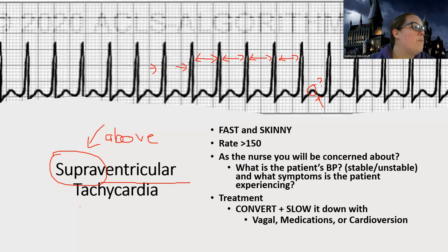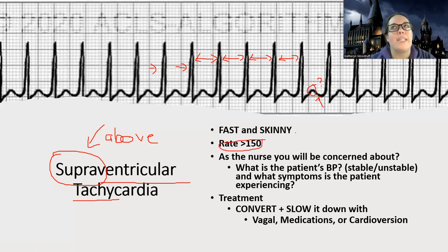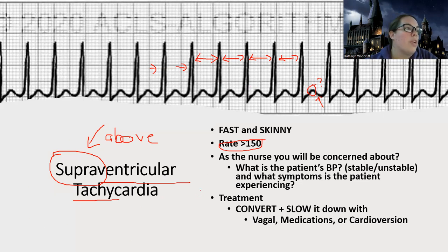We also know this to be a tachycardia, so I'm looking for a fast rhythm — a rate that's greater than 150. This is also the reason why, when I was talking about sinus tachycardia, I said you want to watch if P waves are present. Because once you get to the point where there are no P waves, I'm thinking this patient has supraventricular tachycardia. The way to remember this one: it's fast, skinny, and regular.